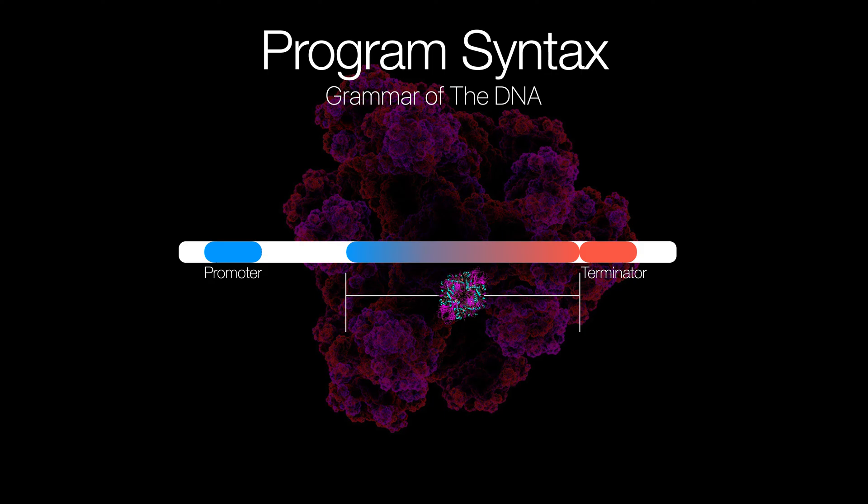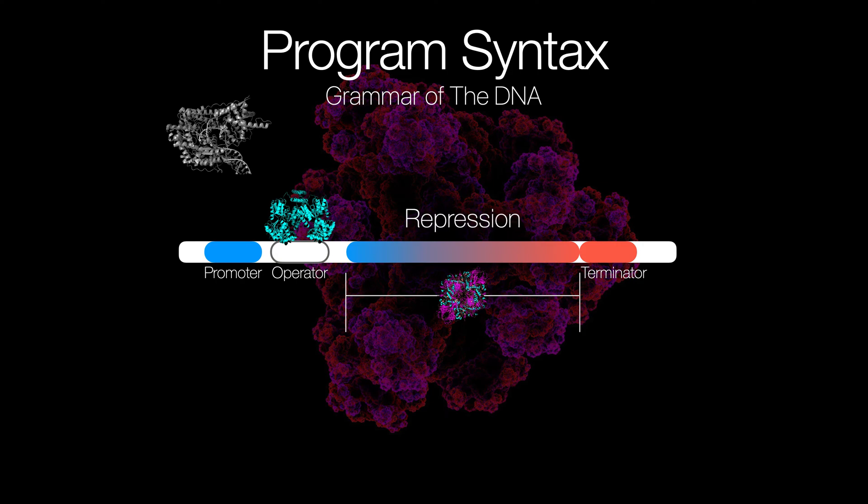But that's not the end of that. We can do even cooler things with our sequence. Let's add something called an operator. And this operator is a landing pad for another protein. And what it does is that it blocks RNA polymerase from even landing. This is what we call repression. And this type of protein is called a repressor.